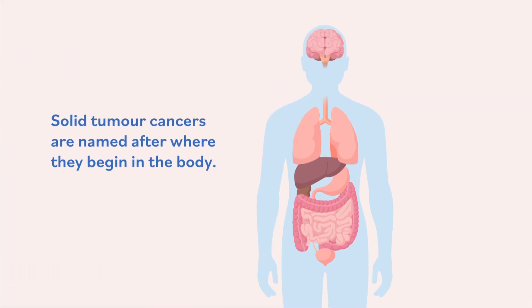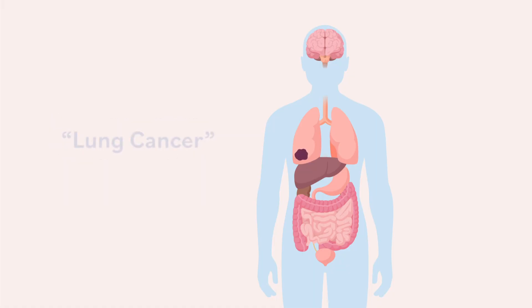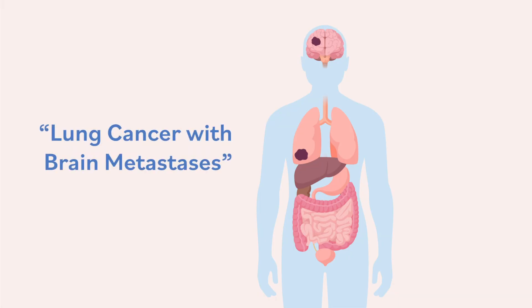Solid tumor cancers are named after where they begin in the body. For example, cancer that begins in the lung is called lung cancer, even if it spreads to other parts of the body. If lung cancer cells spread to the brain, for example, it is called lung cancer with brain metastases.